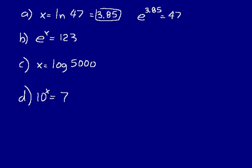In practice problem B, we have E to the X equals 123, and we want to find that exponent. Logarithm means exponent, so if we take the logarithm of 123, we'll know what the exponent is. We need the natural logarithm so we have a base of E. Take the natural logarithm of 123 — that equals 4.81 — so we can rewrite this as E to the 4.81, and therefore X equals 4.81.